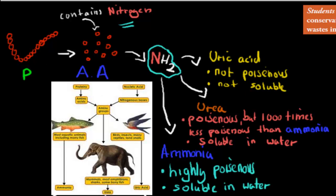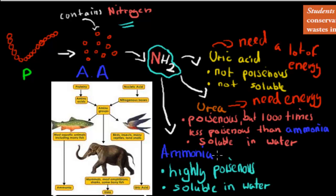Urea needs energy to be produced. Uric acid needs a lot of energy to be produced, whereas ammonia needs little energy.